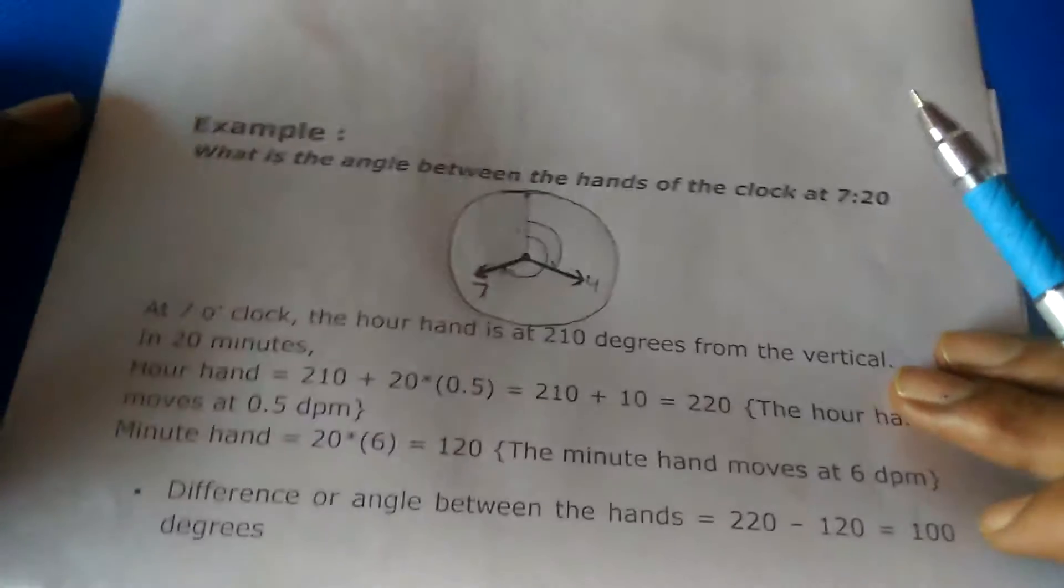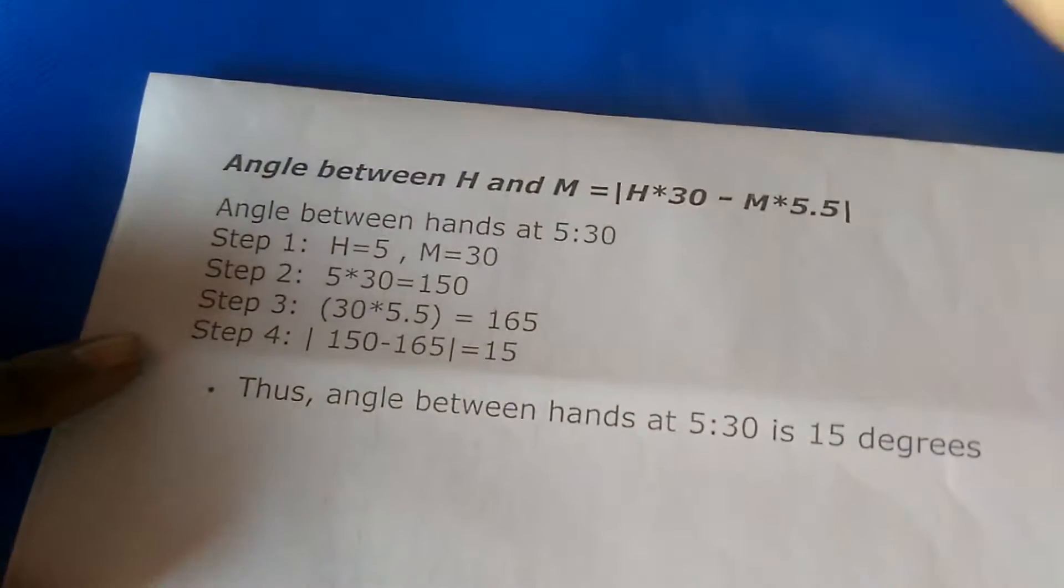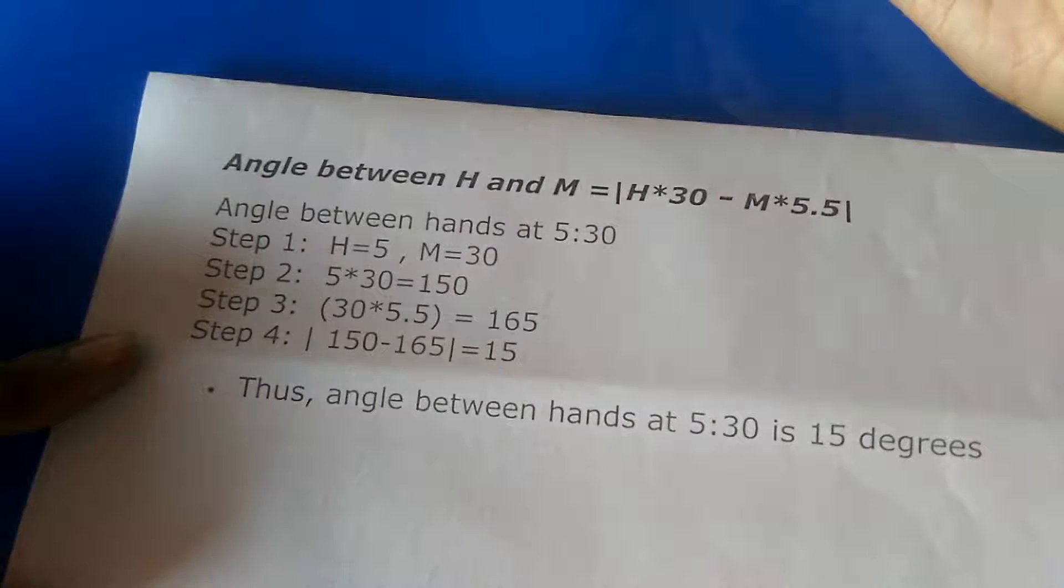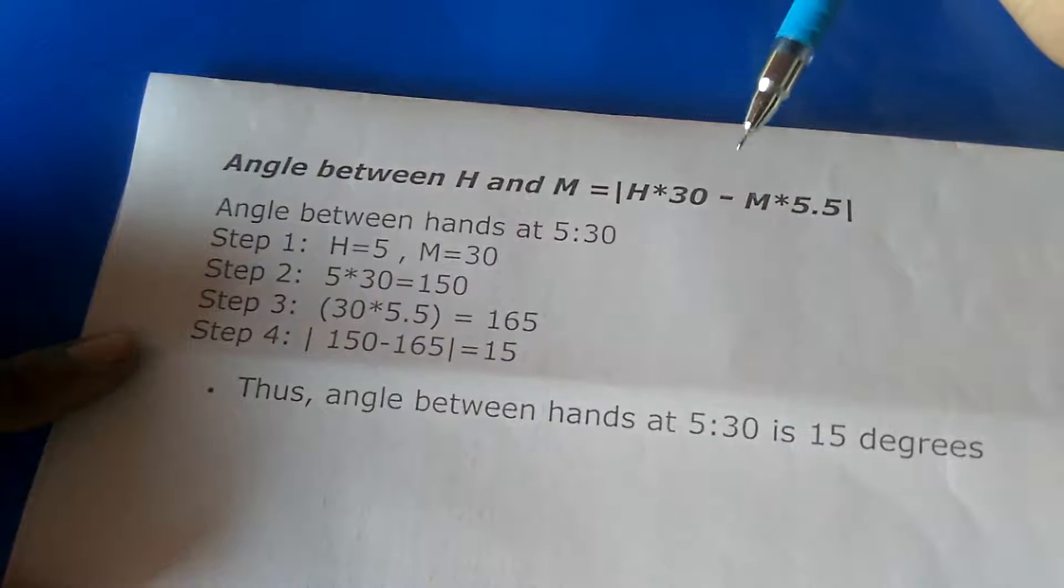We have a tricky formula which is very useful to find the angle between the hour hand and minute hand. The angle equals |h times 30 minus m times 5.5|, where h means hours and m means minutes.